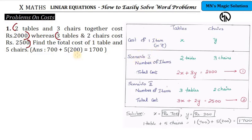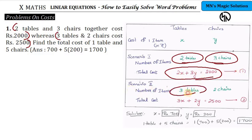For scenario 1, they discuss 2 tables and 3 chairs with total cost 2000. So the cost of 2 tables is 2X and 3 chairs is 3Y. Adding them gives 2X + 3Y = 2000. This is my first equation. Similarly, scenario 2 is 3 tables and 2 chairs, so 3X + 2Y = 2500. This is my second equation.